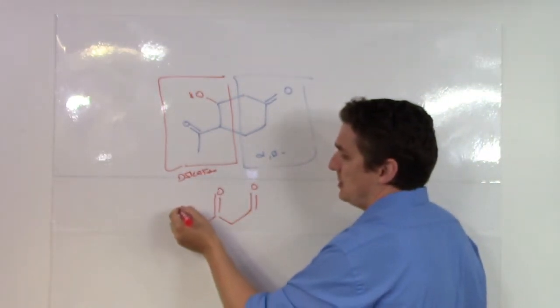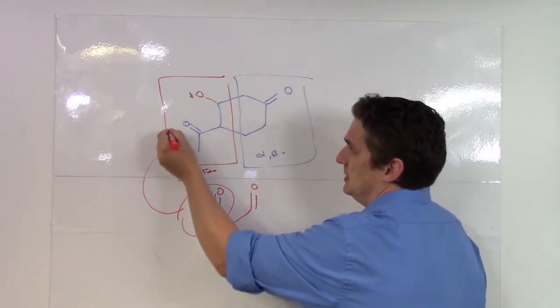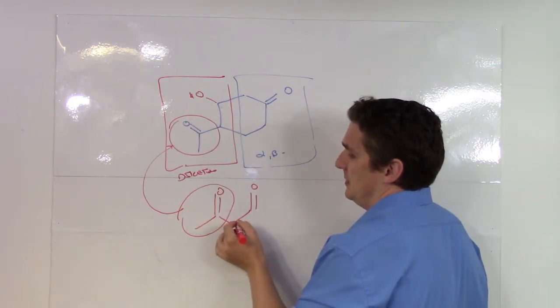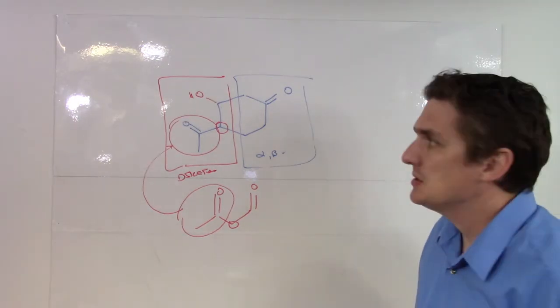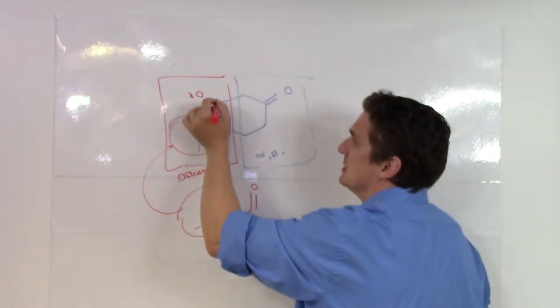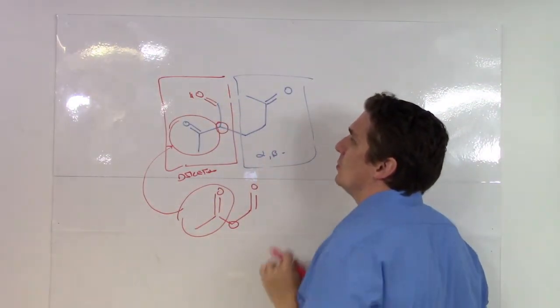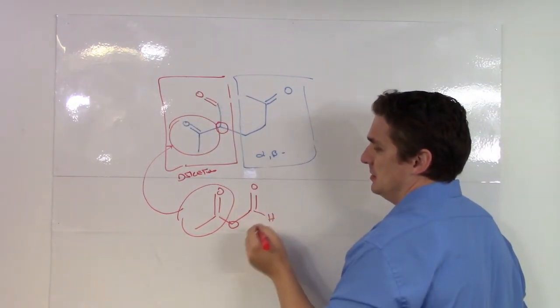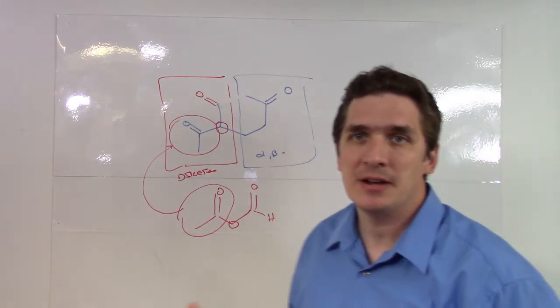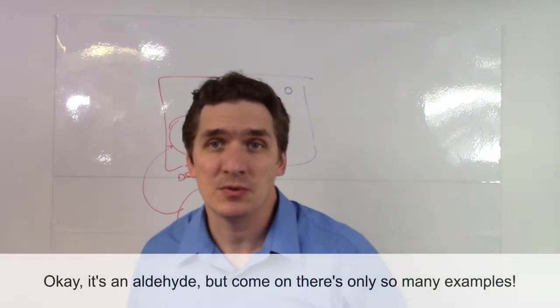So this part here is this lump here. This bridging carbon is this one here. And this OH group would have been where the ketone was. So this originally was a ketone. And this then was our starting diketone for the Michael reaction.